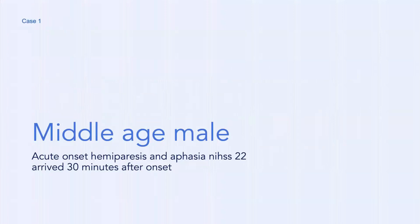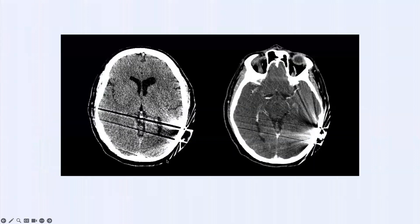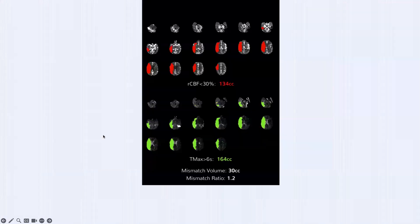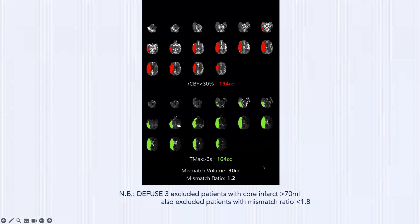Middle-aged male with acute onset left hemiparesis, aphasia, NIH Stroke Scale 22, arrived within 30 minutes of onset — important detail. The brain CT has tremendous streak artifact from a cochlear implant, but CTA shows no right MCA vessels, confirmed on coronal reformat. CT perfusion: CBF <30% = 134 cc's of core infarct; Tmax >6s = 164 cc's; mismatch volume only 30 cc's; mismatch ratio 1.2. In DEFUSE 3, core >70 cc's was excluded — this is nearly double. But this patient came in within 30 minutes, not the 6–24 hour window of DEFUSE 3.